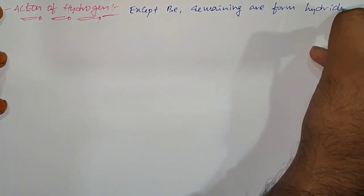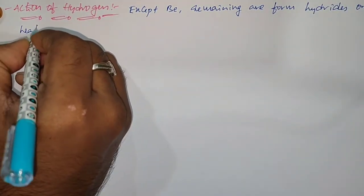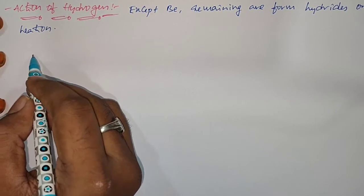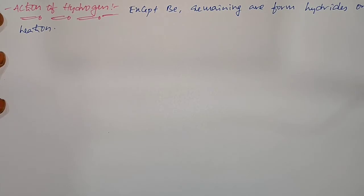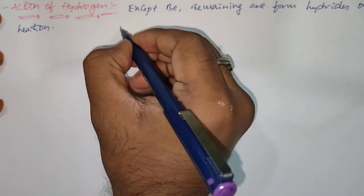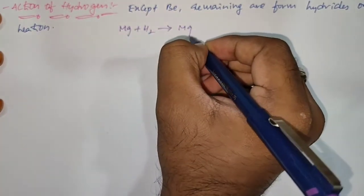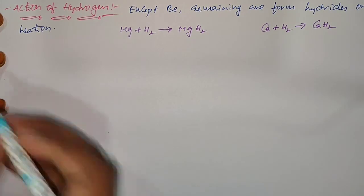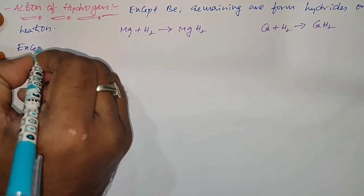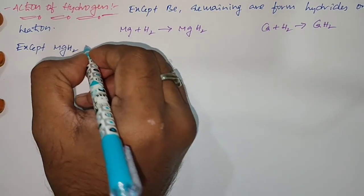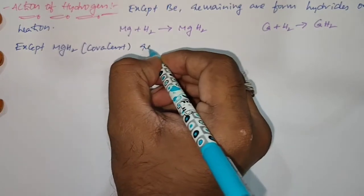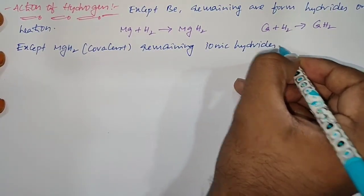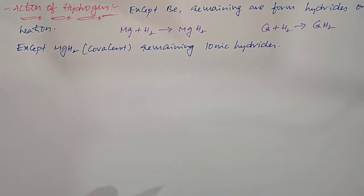So in the hydrides of 2A group elements, magnesium hydride is covalent in nature but the remaining are ionic in nature. For example, Mg + H2 gives MgH2, and Ca + H2 gives CaH2. Except magnesium hydride, the remaining — calcium hydride, strontium hydride, and barium hydride — are ionic hydrides.